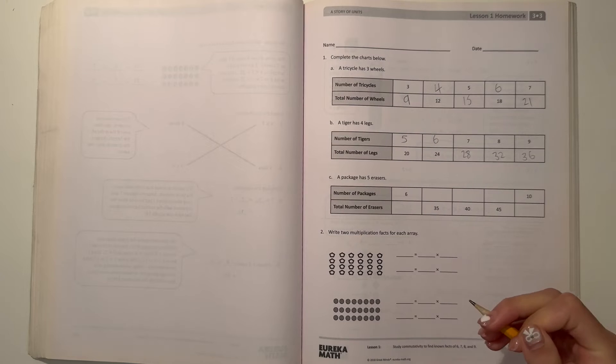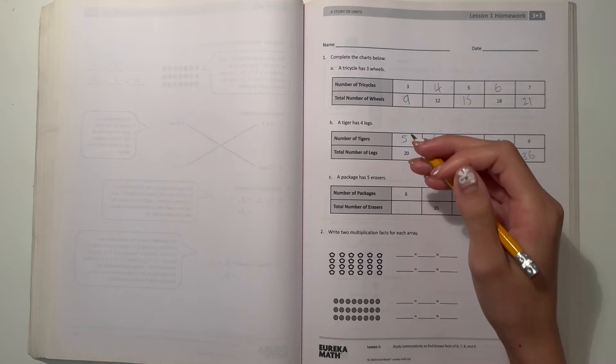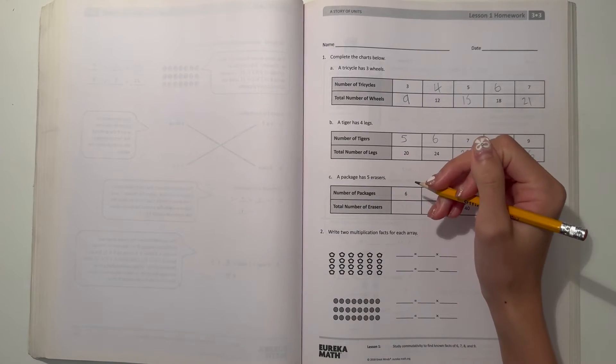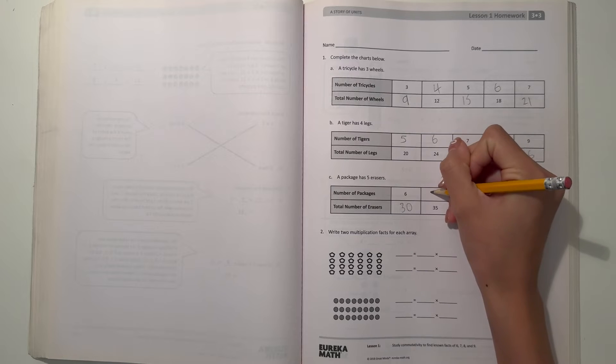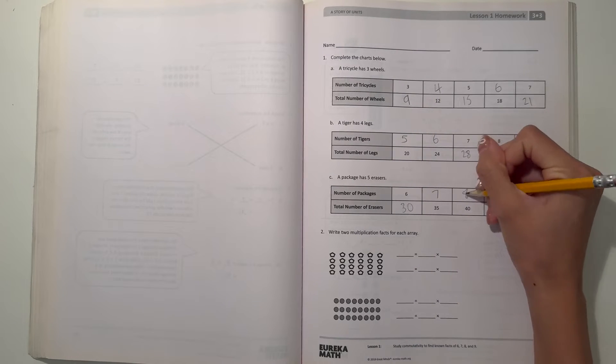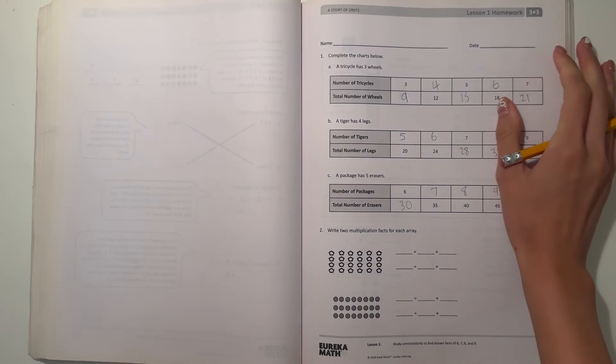And then now see, a package has 5 erasers. So if there are 6 packages, then there are 30 erasers. And there's 35, then there's 7. 8, 9, and 10 times 5 is 50.